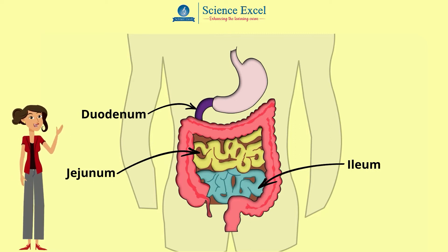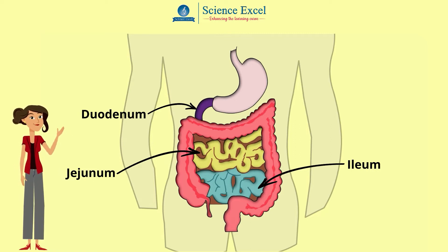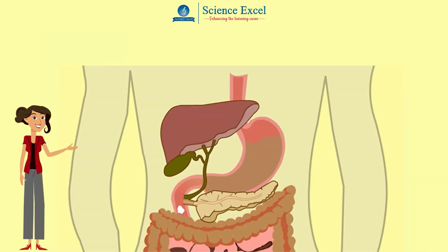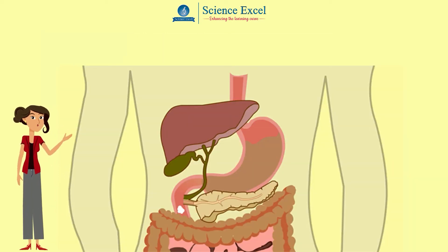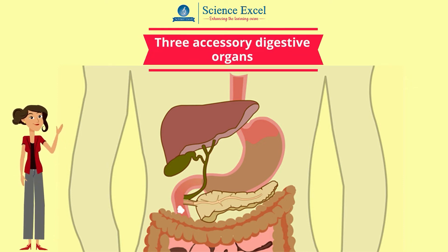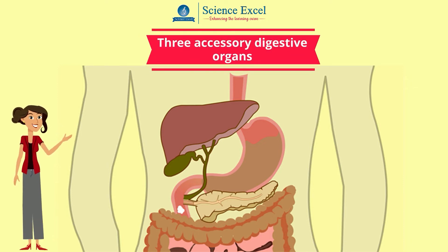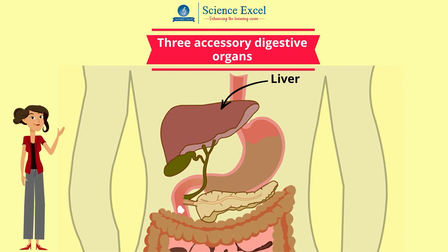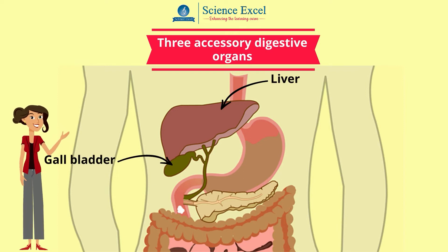It is here that most of the final breakdown of food occurs. Chemical digestion in the small intestine relies on the activities of three accessory digestive organs: the liver, the gallbladder, and the pancreas.